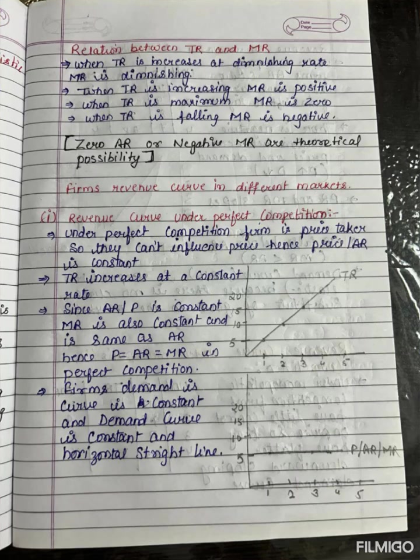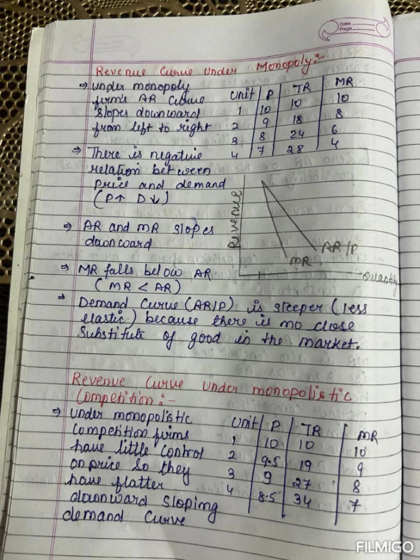In case of imperfect competition, like monopoly and monopolistic competition, total revenue first increases, becomes maximum, and then declines.